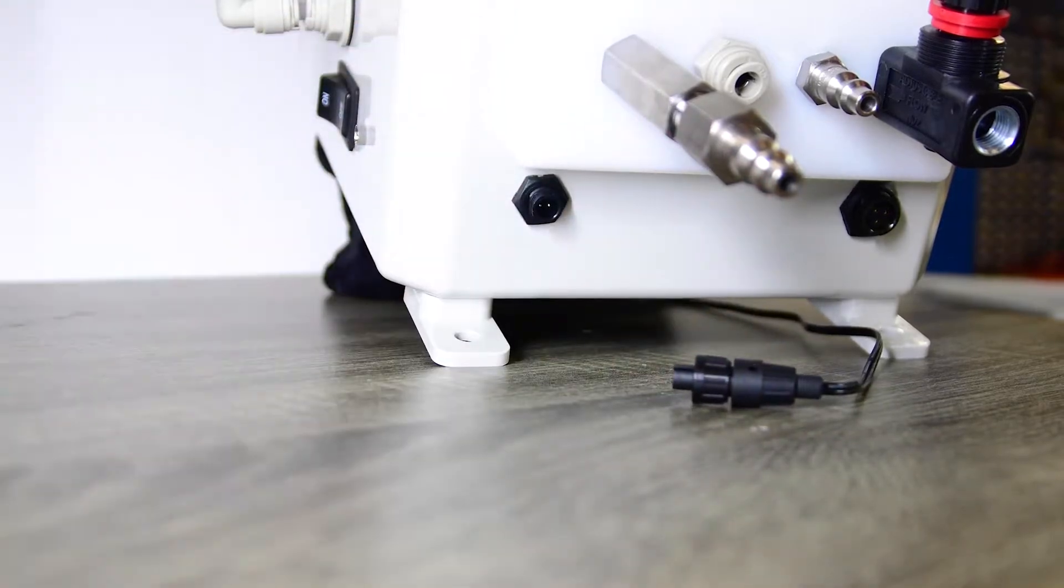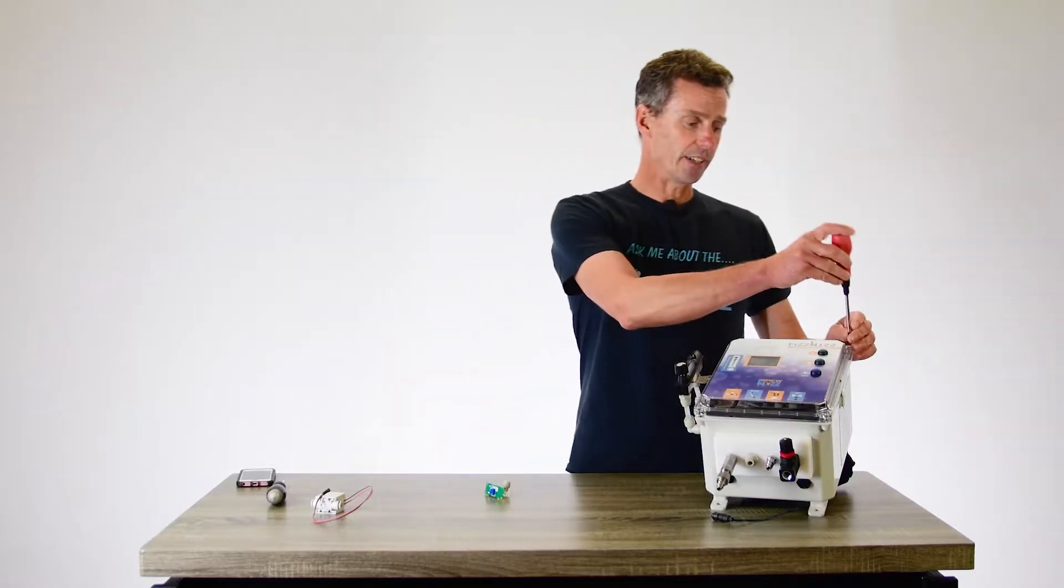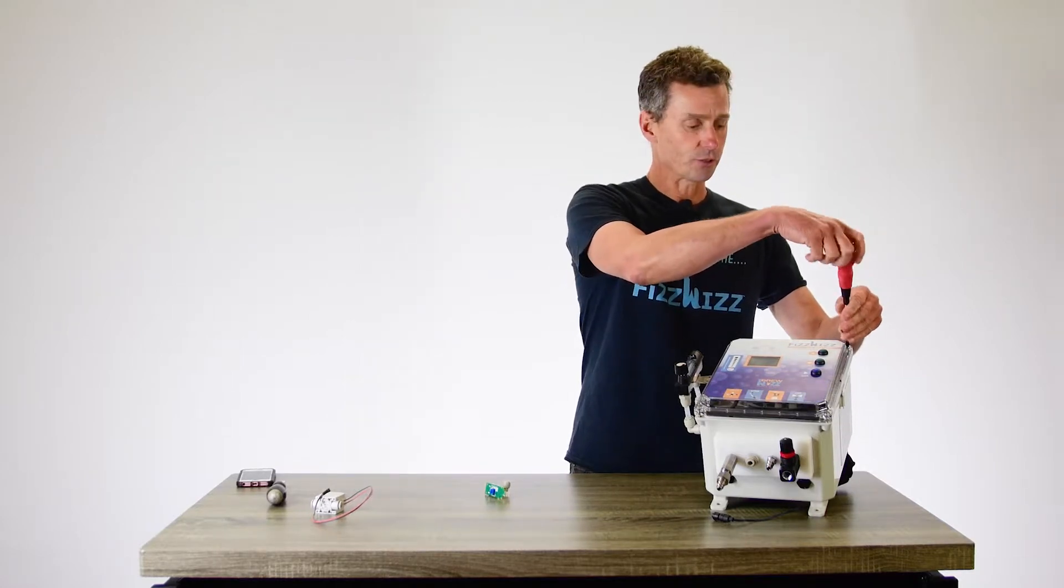Pull the power supply out and get rid of the lead, and then we're going to take the lid off. To take the lid off, it's just four screws with a crosshead screwdriver.